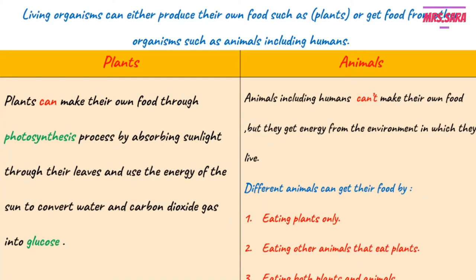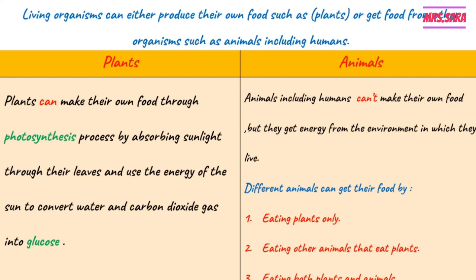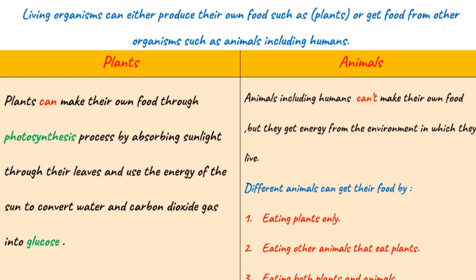Plants can make their own food through photosynthesis by absorbing sunlight through their leaves and using the sun's energy to convert water and carbon dioxide into glucose. Animals including humans can't make their own food but get energy from their environment. Different animals get food by: number one, eating plants only like rabbits eating grass; number two, eating other animals that eat plants like foxes eating rabbits; number three, eating both plants and animals like humans.